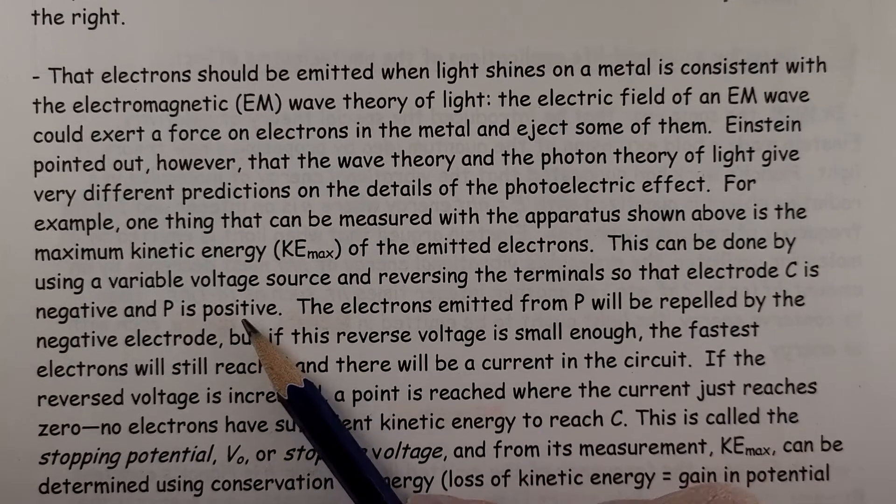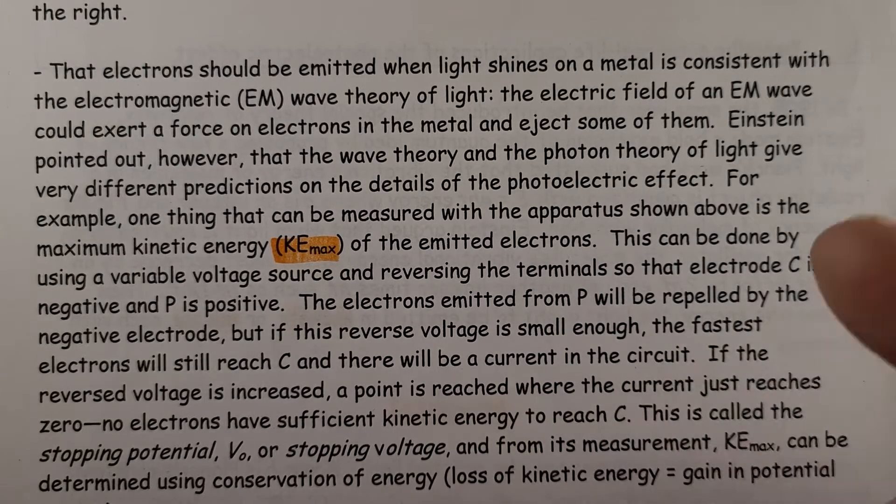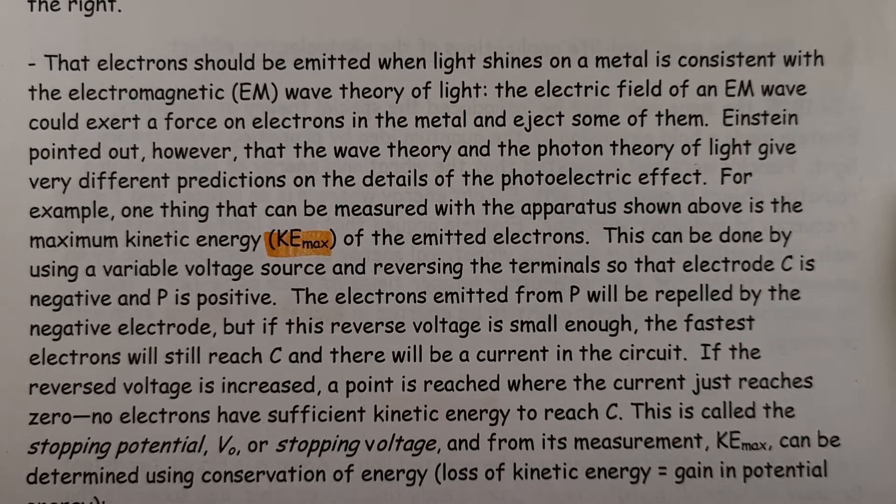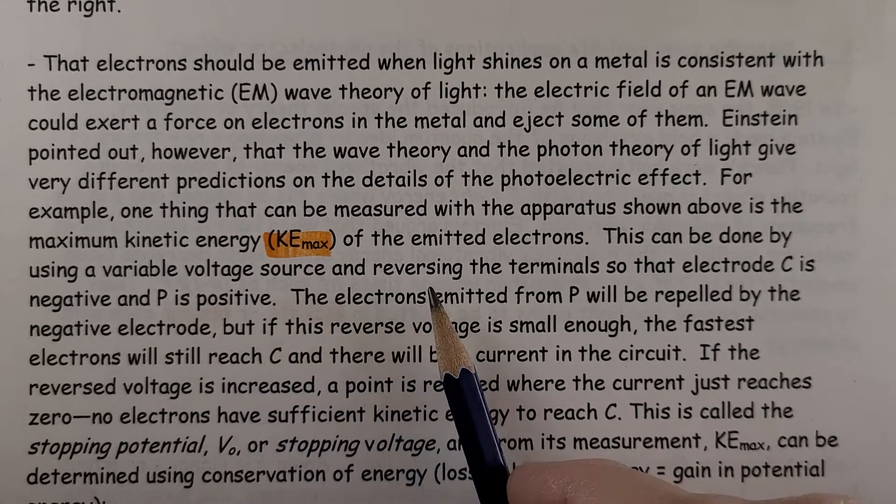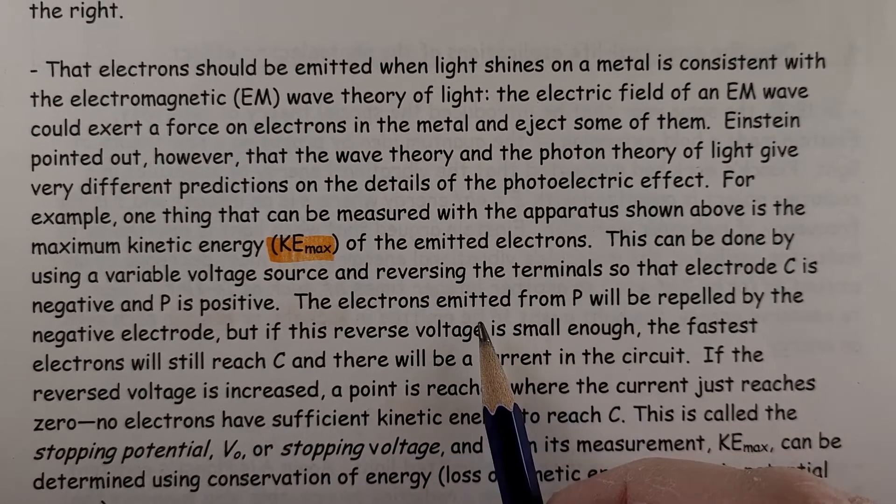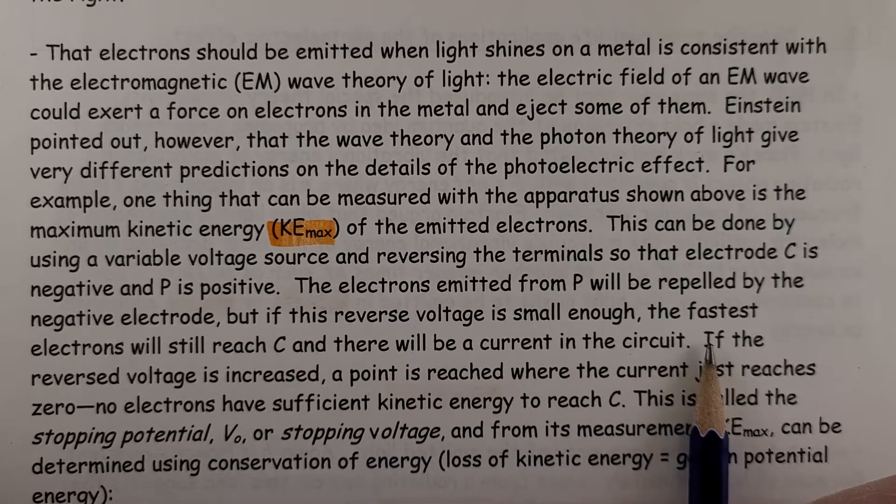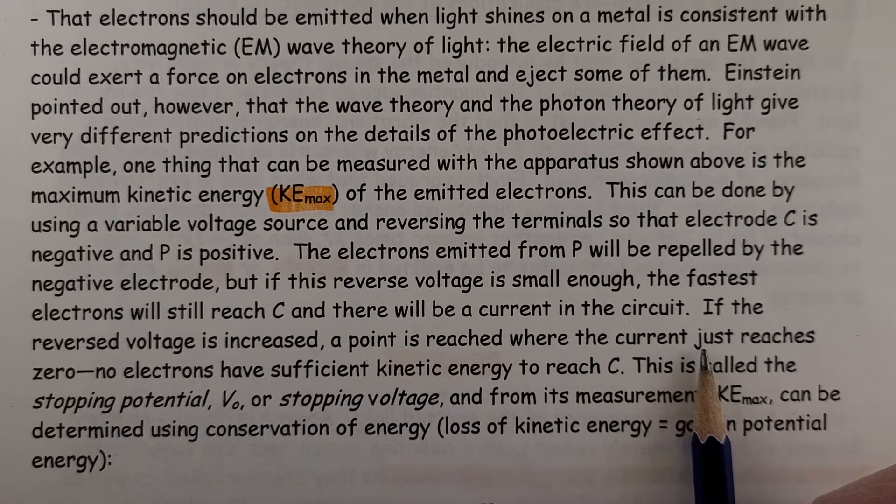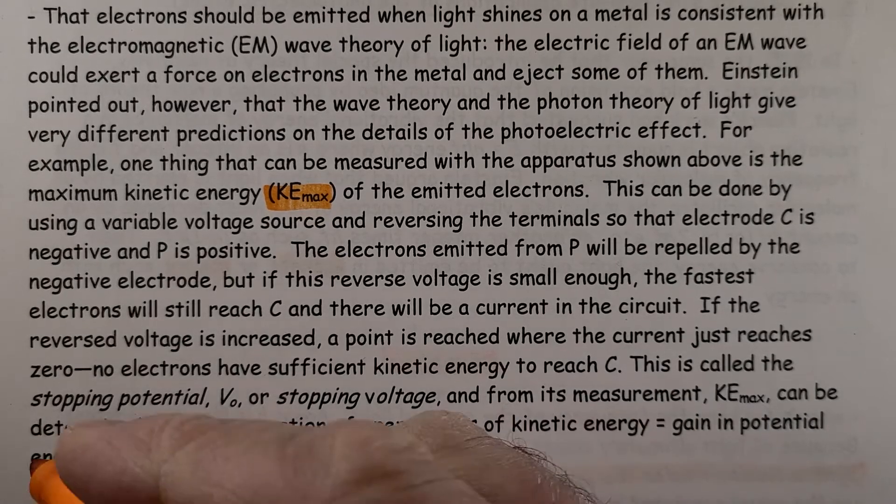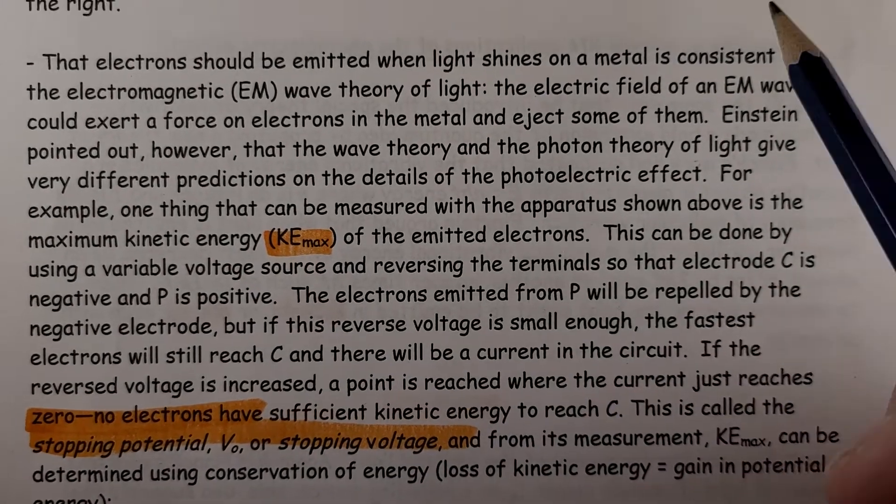For example, one thing that can be measured with the apparatus shown above is the maximum kinetic energy of the electrons. We can figure that out, and you did do that on that simulation by reversing the poles of the battery and stopping an electron. That gave you an idea of what energy that electron must have had. So this can be done by using a variable voltage source and reversing the terminals so that the electrode C is negative and P is positive. The electrons emitted from P will be repelled by the negative electrode, but if this reverse voltage is small enough, the fastest electrons will still reach C, and there will be a current in the circuit. If the reverse voltage is increased to a point where the current just reaches zero, so no electrons have sufficient energy to reach C, this is called the stopping potential. So the potential to stop, or the stopping voltage.